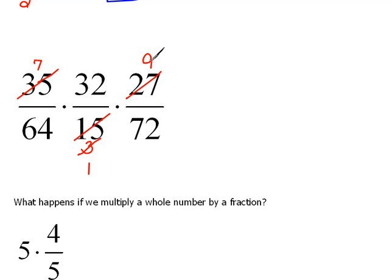Now, we're still not done, because I notice the 9 and the 72 have something in common. 9 will go into 9 one time, and 9 will go into 72 eight times. 9 times 8 is 72.